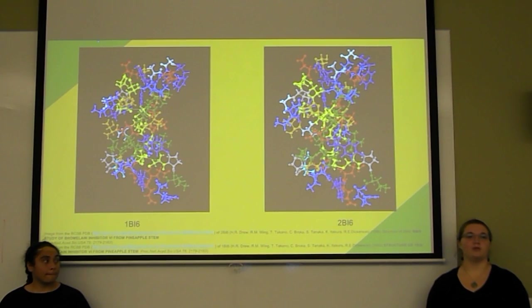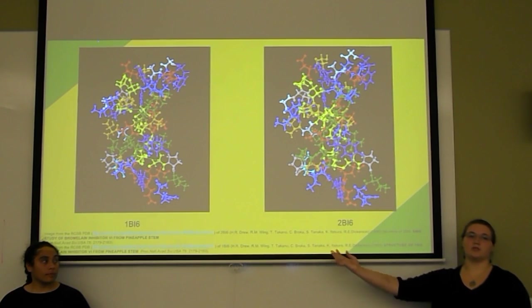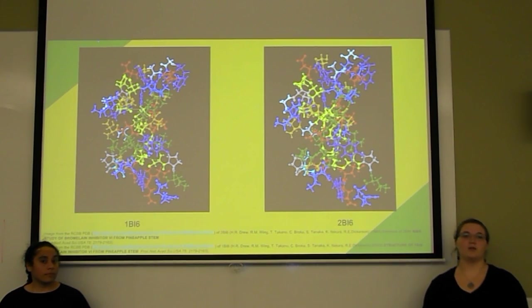In addition, bromelain is comprised of various non-proteases such as esterase, phosphatase, glucosidase, peroxidase, and cellulases. Presented here is the structure of 1Bi6, bromelain inhibitor, and 2Bi6, stem bromelain.